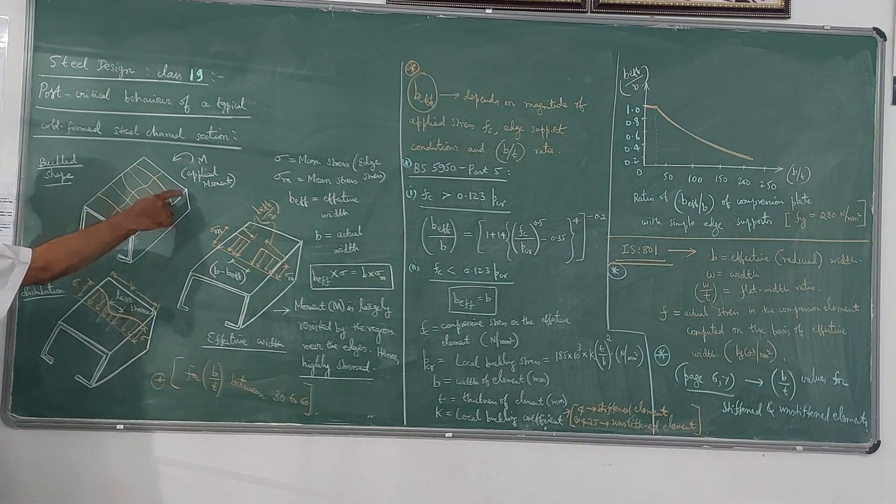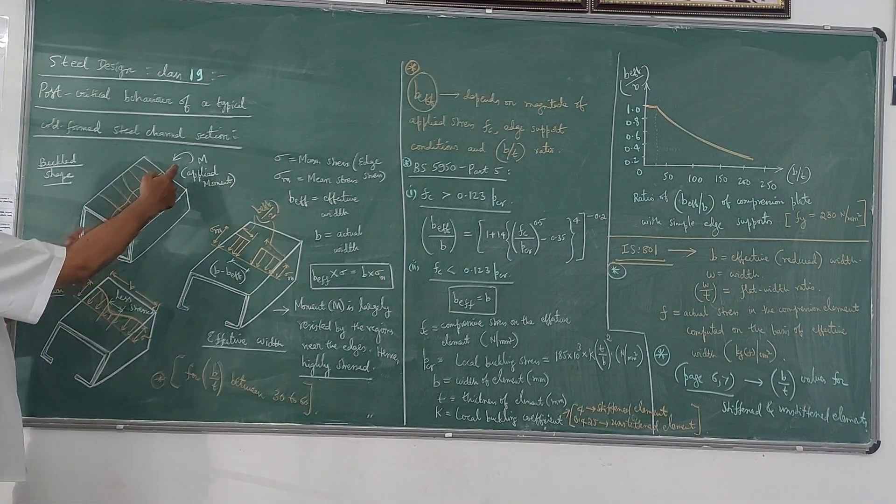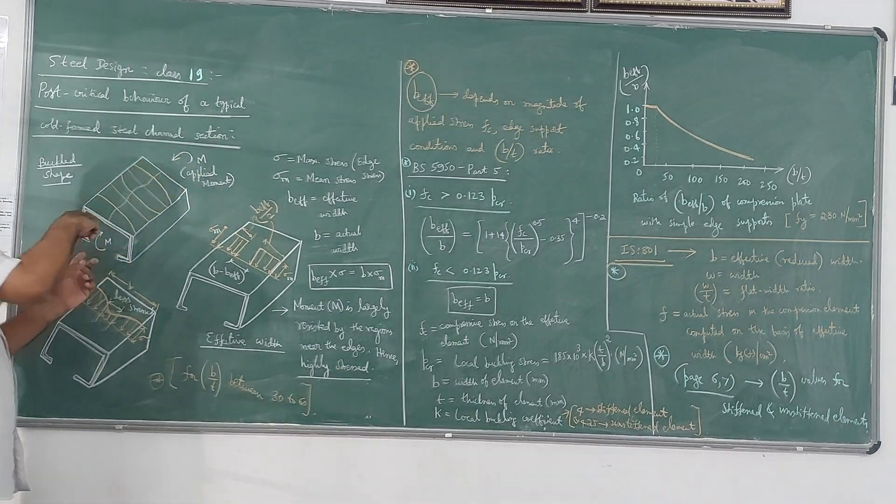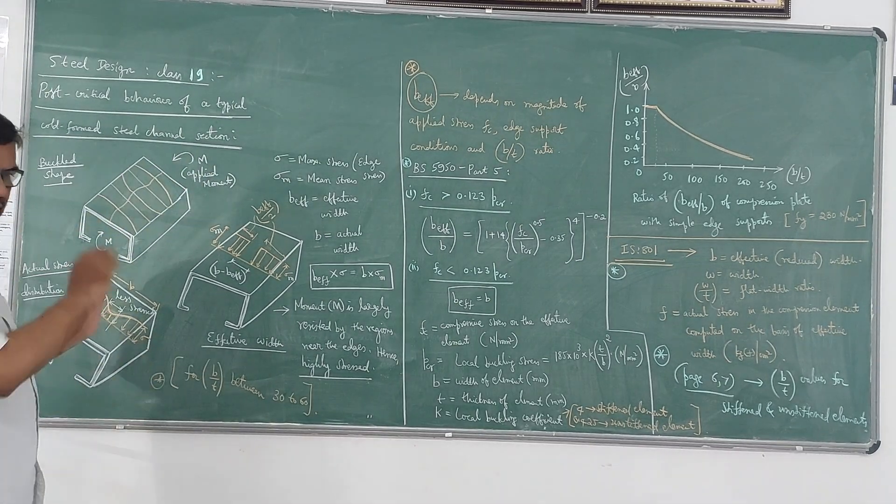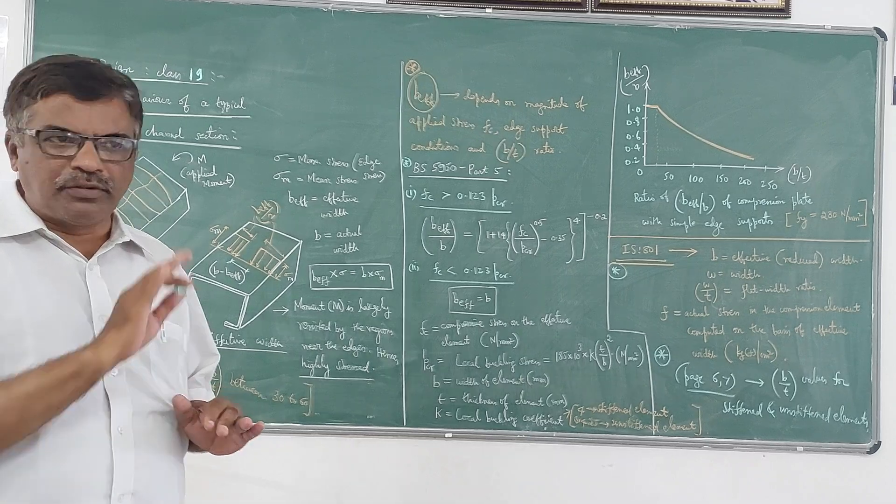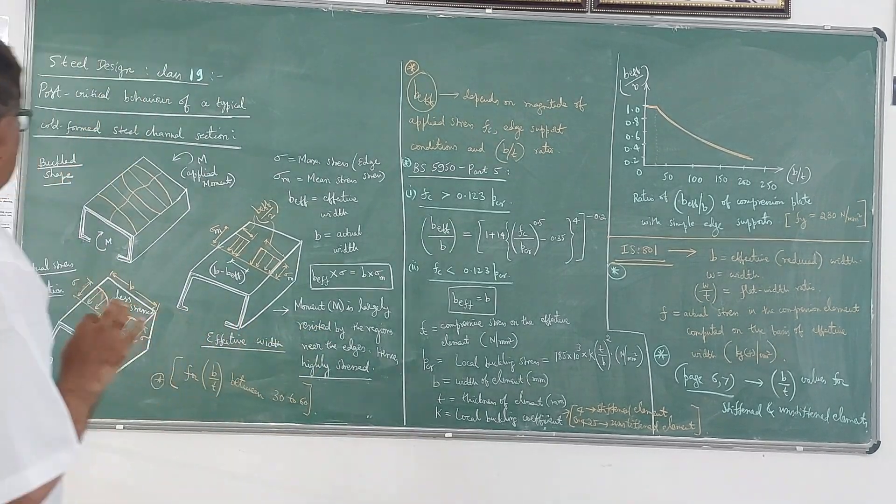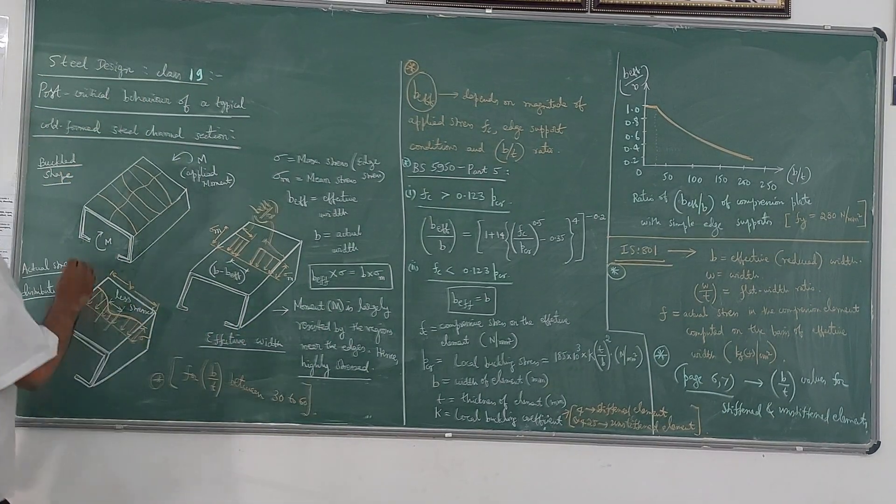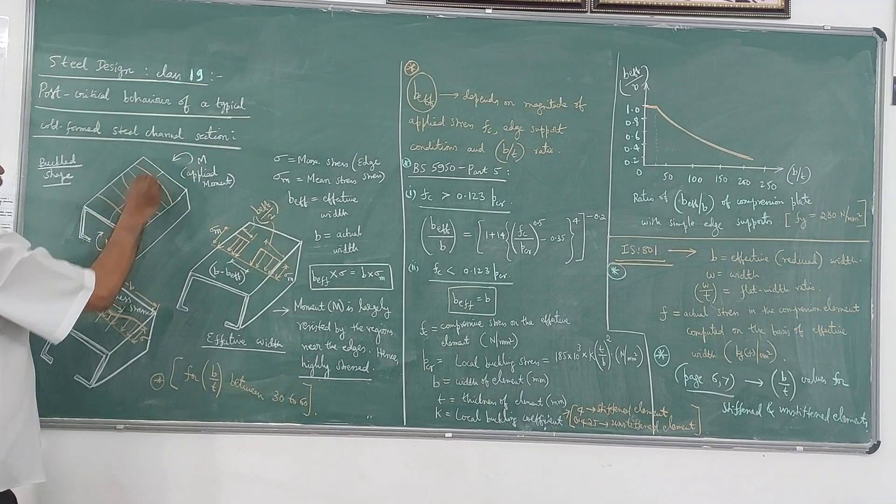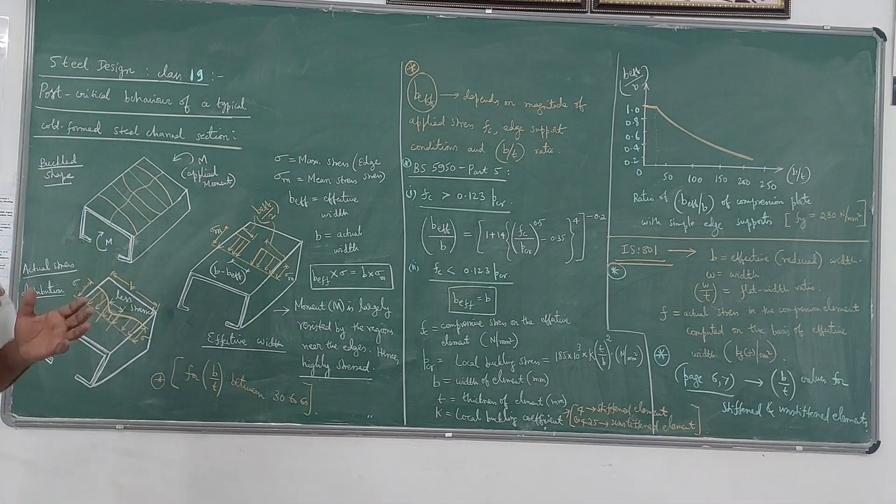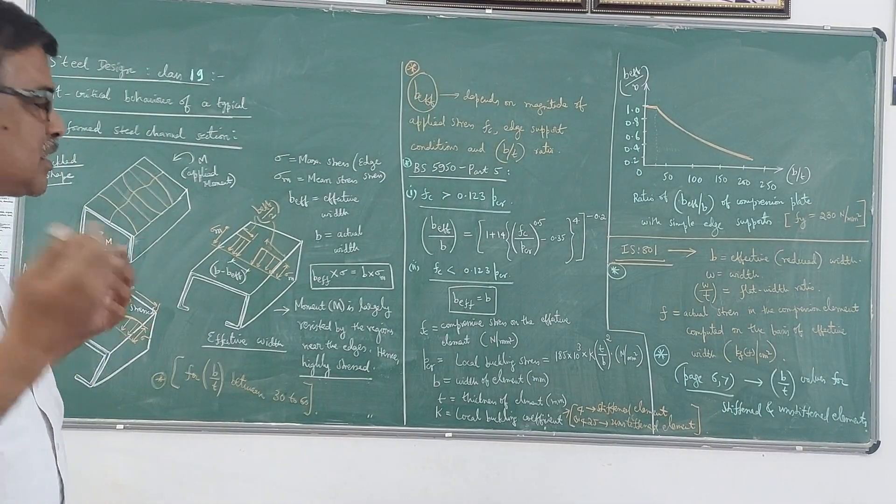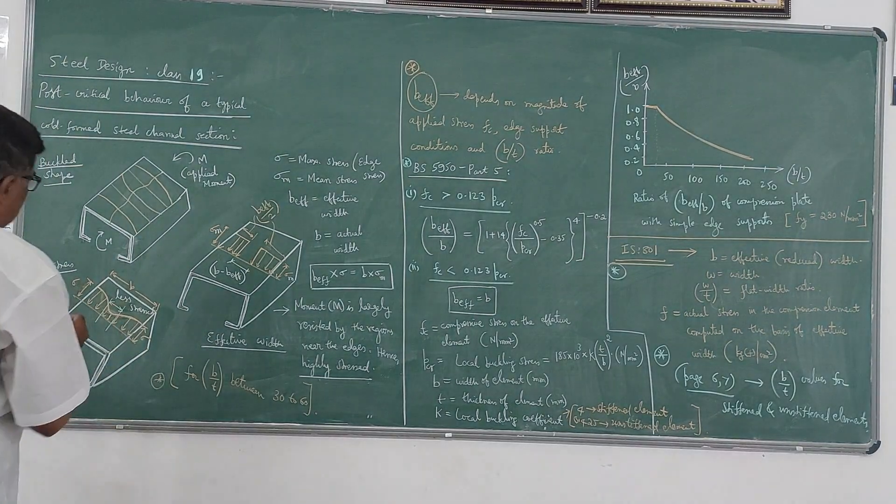Now this is the channel section I have taken and M is the applied moment at the ends. So that means that member is subjected to uniform moment throughout. In that case what happens at the edges? At the edges that moment will have more effect, so that means higher stresses will develop at the edges.